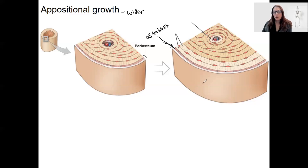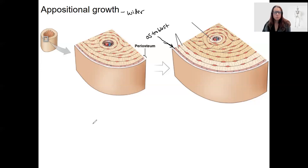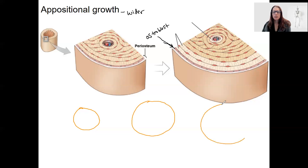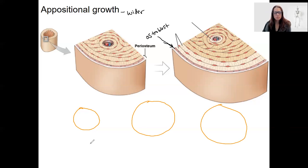In addition, as this occurs, the medullary cavity is also going to increase in size. I'm going to draw a separate picture with three stages of bone growth: a child, a young adult, and an adult, and then explain what happens at these stages.